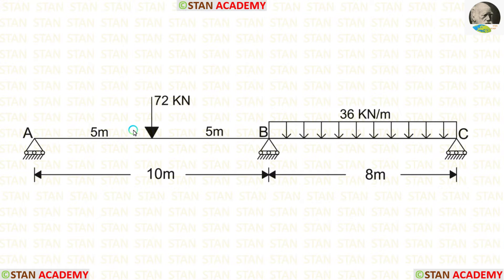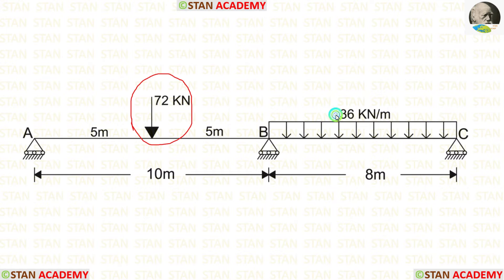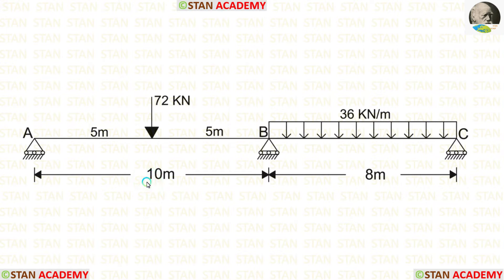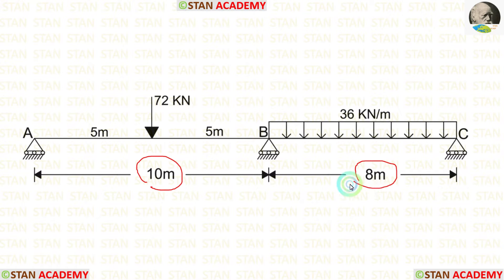In the span AB, we are having a point load acting on the center. In the span BC, we are having a uniformly distributed load acting for the full span. Span AB is 10 meters long and span BC is 8 meters long.